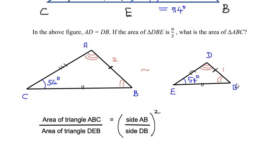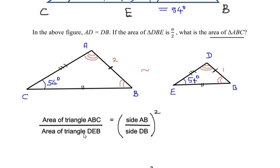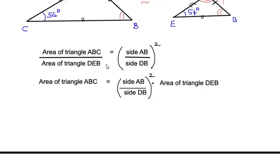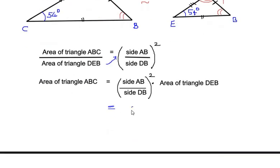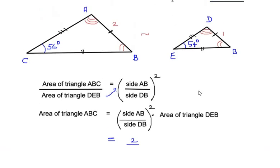Now we have to find out the area of the big triangle, that is triangle ABC, so let us rearrange the given formula. Area of triangle DEB goes on the other side and multiplies with the given sides. We had taken side AB as 2 centimeters and side DB as 1.